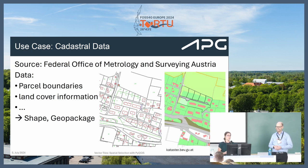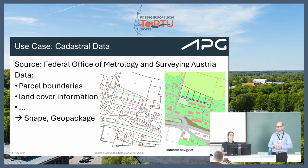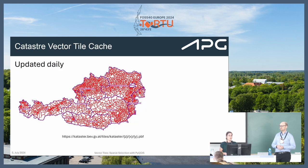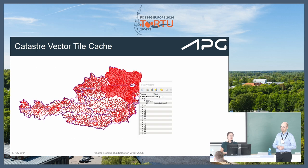In the past, we got this data via shapefile or geopackage. We asked them for current data, and one week later we got the information. But now they have a vector tile cache. It's updated daily and it's free — a lot of plus points. As a vector tile cache works, we can select the data and get the attribute information and everything.